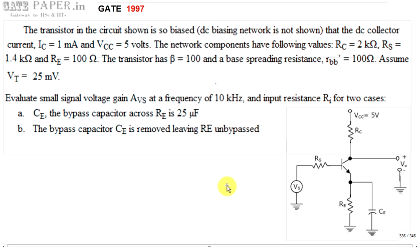We are discussing the GATE 1997 ECE paper. This question is related to analog circuits and it's a 5-mark question. We look at the circuit diagram of a common emitter amplifier with emitter bypass capacitor CE. We are going to calculate gain and input impedance at 10 kHz with CE present and with CE removed, to see the effect of the emitter bypass capacitance on gain and input impedance.